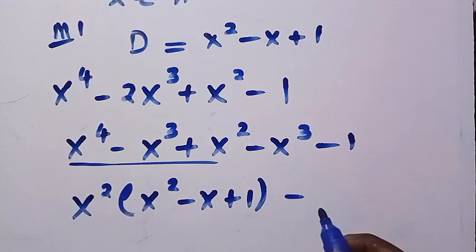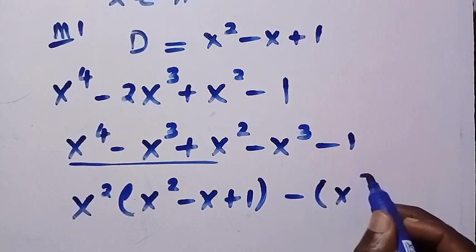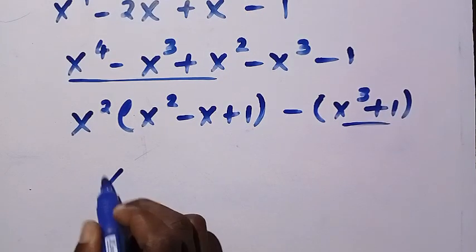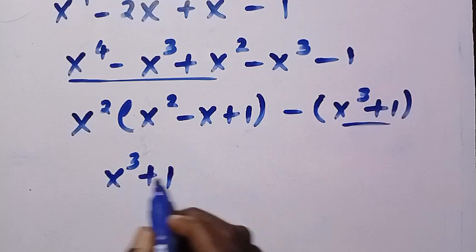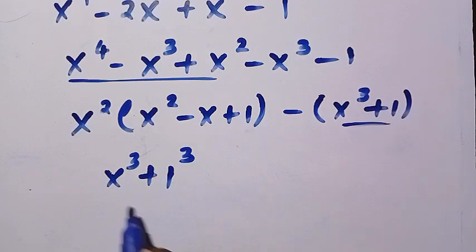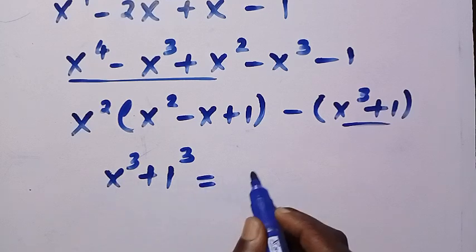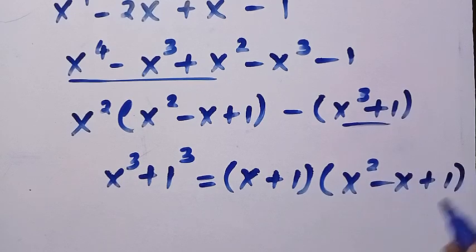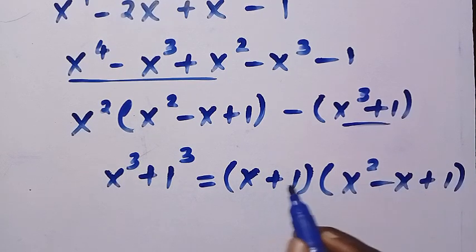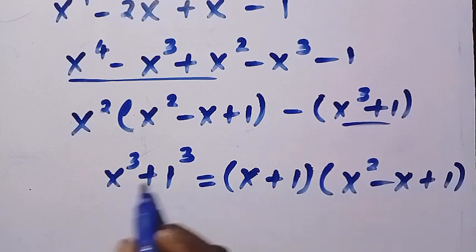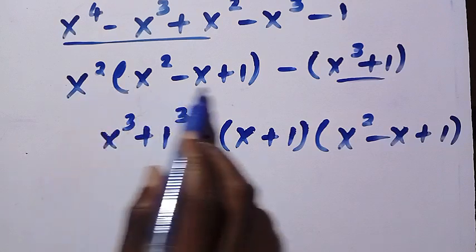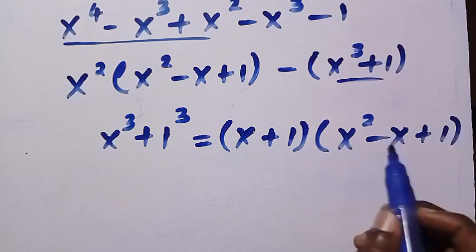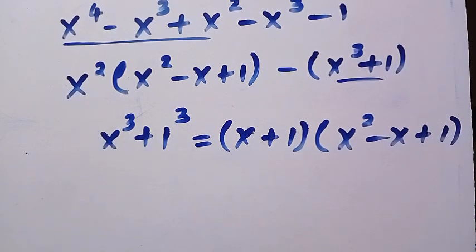Then, taking out negative from the remaining terms, we have x cubed plus 1 in the bracket. Now, x cubed plus 1 can be written as x cubed plus 1 cubed — this is a sum of two cubes. The identity for sum of two cubes is x plus 1, multiplied by x squared minus x plus 1. So expanding gives x times (x squared minus x plus 1), and we can see that x squared minus x plus 1 also appears here, so we factor it out.